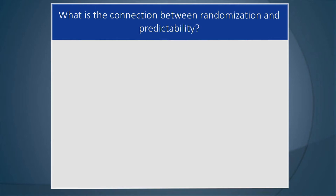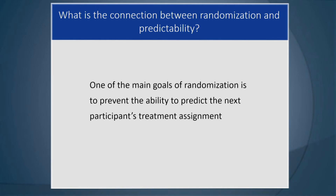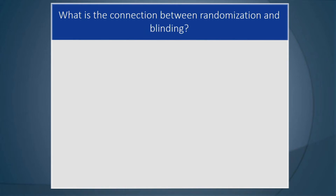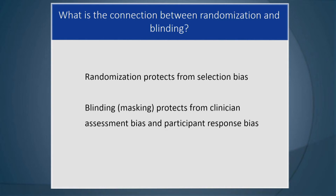What is the connection between randomization and predictability? One of the main goals of randomization is to prevent the ability to predict the next participant's treatment assignment. What's the connection between randomization and blinding or masking? Randomization protects from selection bias, and masking protects from clinician assessment bias and participant response bias. Randomization ensures objective assignment, while blinding ensures neither participant nor provider is biased in assessment or response.